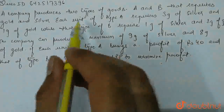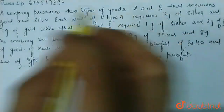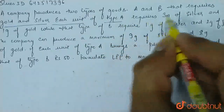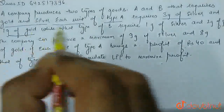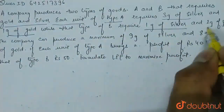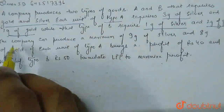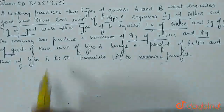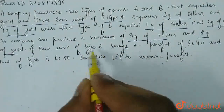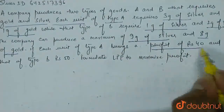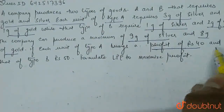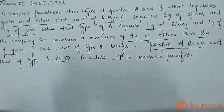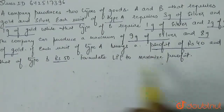The question is given: A company produces two types of goods, A and B, that require gold and silver. Each unit of type A requires 3 grams of silver and 1 gram of gold, while type B requires 1 gram of silver and 2 grams of gold. The company can produce a maximum of 9 grams of silver and 8 grams of gold.